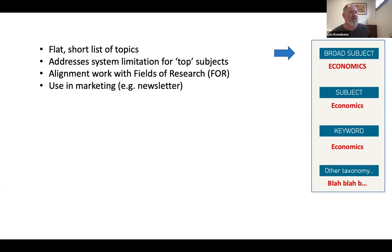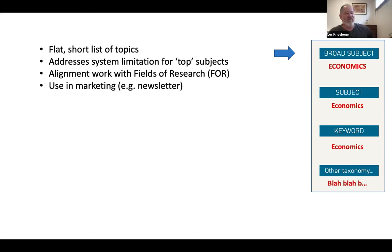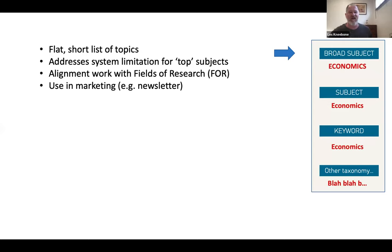Second: Broad Subjects. This was a short list - 15, actually 13 topics at the time - there to address a system limitation where it was difficult to pull out a top level from the subjects, mainly because subjects was itself a subset of another vocabulary. Some alignment work had been done to align the broad subjects with the Fields of Research, an Australian research classification system. The broad subjects were very important in driving marketing such as newsletters, parts of the website, and generation of icons.